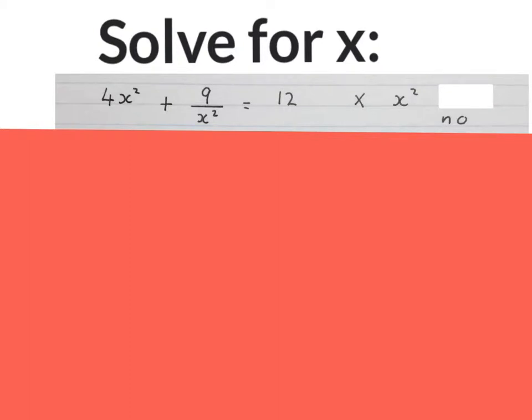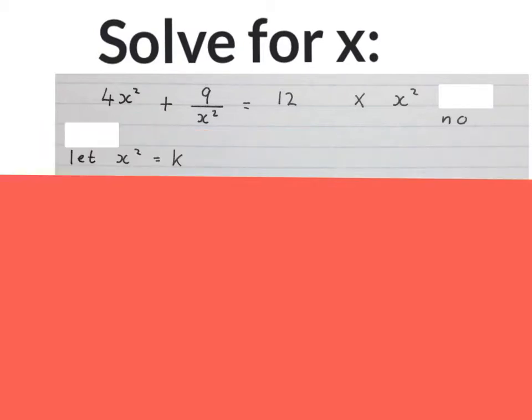But then you say, no, we do not want to times by x squared, because this is going to become 4x to the power of 4 then. And on school level, we don't want to solve equations with an x to the power of 4.